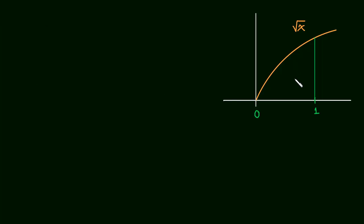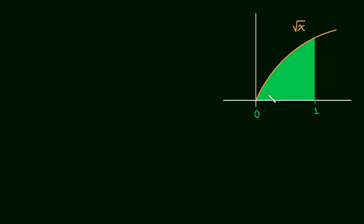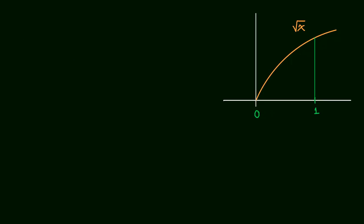Let's do an example that will require us to shift our thinking about finding an exact area just a little bit. This is maybe a little bit more advanced example. Let's try and find the area under the graph of the square root of x as x goes from 0 to 1.